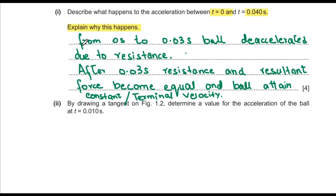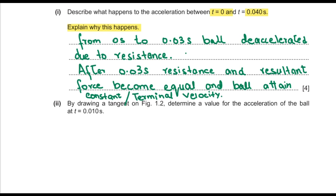Writing the reason: from 0 seconds to 0.03 seconds the ball decelerates due to the resistance of oil. After 0.03 seconds, the resistance and the resultant force become equal to each other and the ball attains a constant or terminal velocity. Question two asks by drawing a tangent on figure 1.2 to determine the acceleration of the ball at time t = 0.010 seconds.